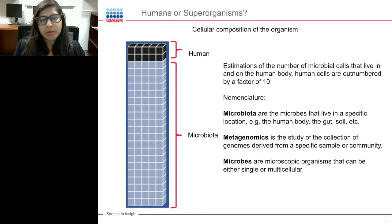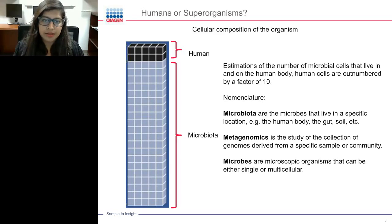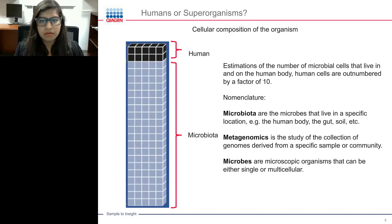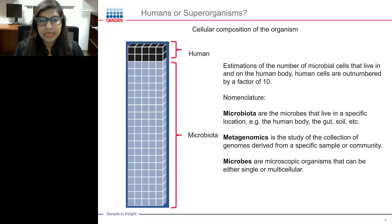What is our cellular composition made of? It has been estimated that microbial cells living in and on a human body outnumber human cells by a factor of 10. That means the microbiota is really important to understand for any infectious disease or metagenomic research. Key terminology includes: microbiota — microbes that live in a specific location such as the human body, gut, or soil; metagenomics — the study of genomes derived from a specific sample or community; and microbial species — microscopic organisms that can be single or multicellular.